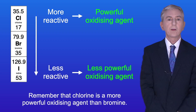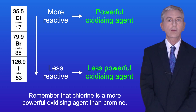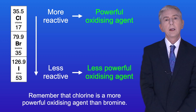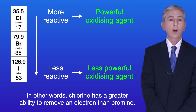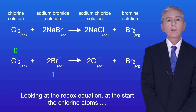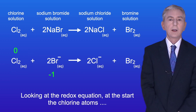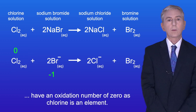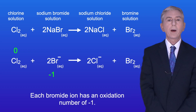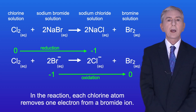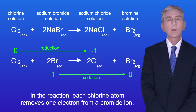Remember that chlorine is a more powerful oxidizing agent than bromine - in other words chlorine has a greater ability to remove an electron than bromine. Looking at the redox equation, at the start the chlorine atoms have an oxidation number of zero as chlorine is an element. Each bromide ion has an oxidation number of minus one.